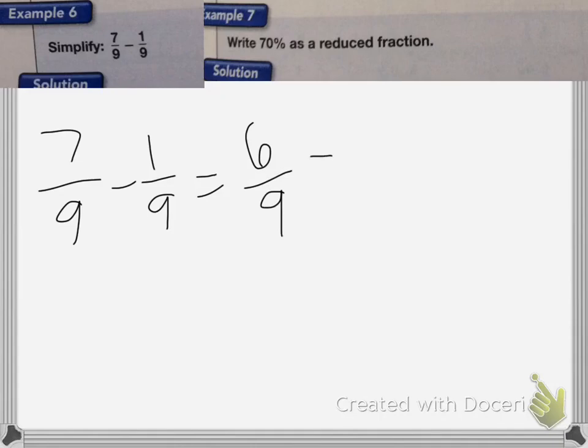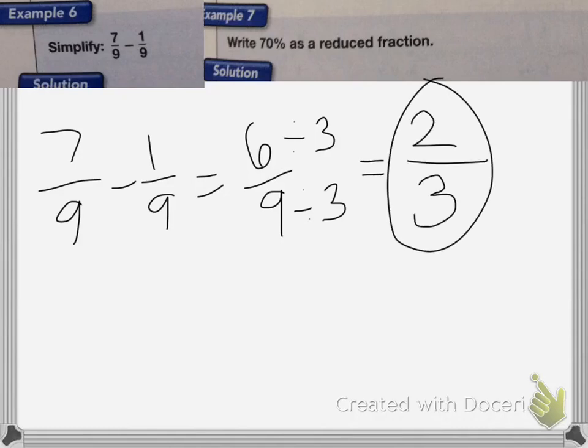So 7 ninths minus 1 ninth is equal to 6 ninths, which then I need to reduce, and I will divide both the top and the bottom by 3. So 6 divided by 3 is 2, 9 divided by 3 is 3. So the answer is 2 thirds.